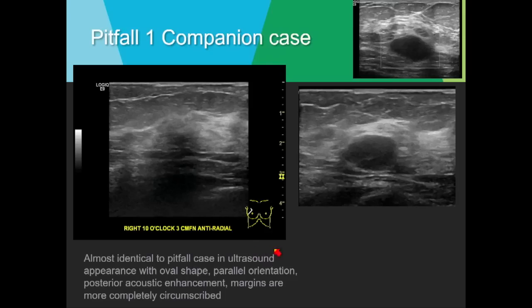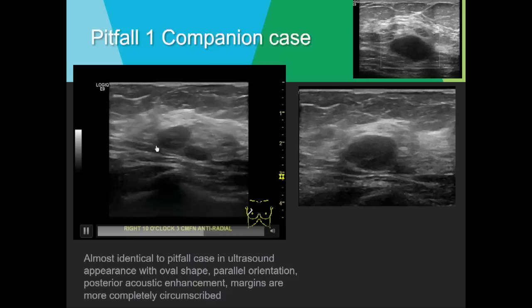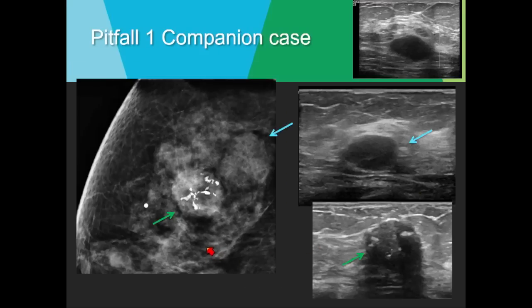The first companion case looks very similar to the primary case — oval, parallel, hypoechoic, with posterior acoustic shadowing. On the clip there's also a second lesion and a septation. This turned out to be a fibroadenoma. The patient had several fibroadenomas; one was palpable, and on old mammogram comparison they were decreasing in size. One had developed typical benign popcorn-like calcifications.